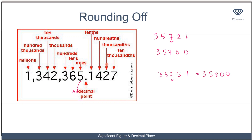Now let me give one example involving decimals. If I have 7.146 and I'm told to round to the nearest hundredth, I want the hundredths digit to be the last non-zero digit. The next digit after it is 6, which is greater than 5, so I round up by changing that digit to zero and increasing the hundredths digit by one, giving 7.15.